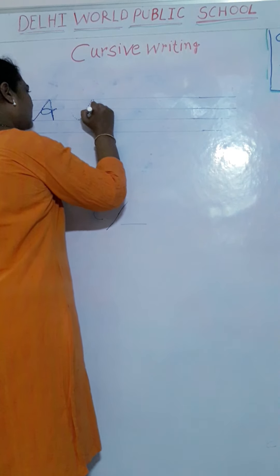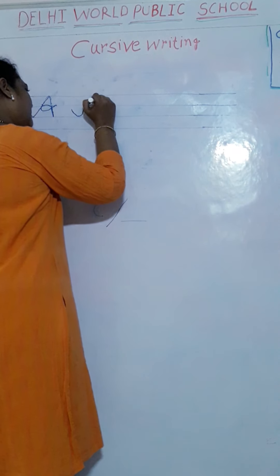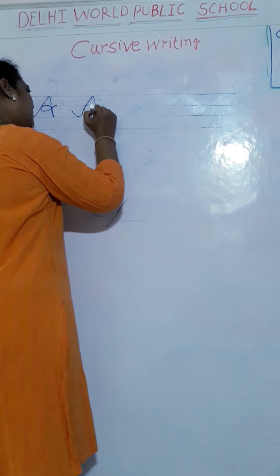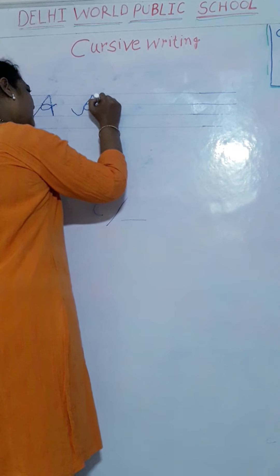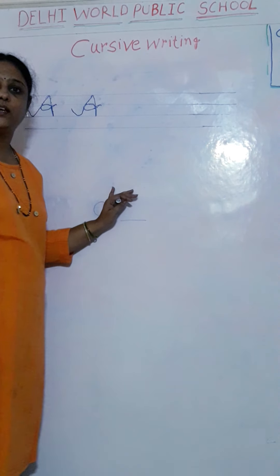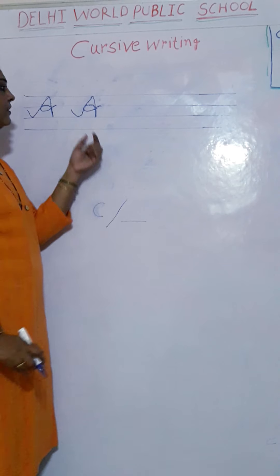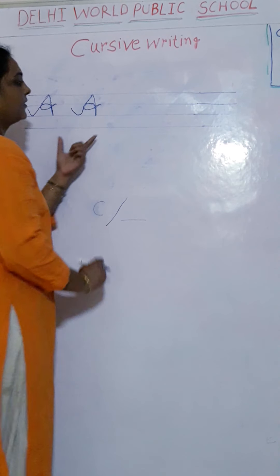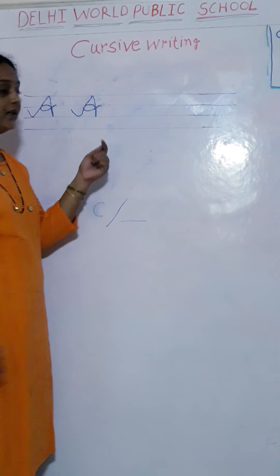Okay? Start from this point — up to the mountain, down to the mountain, again up, and make a curve. A. A. A says A. Okay?